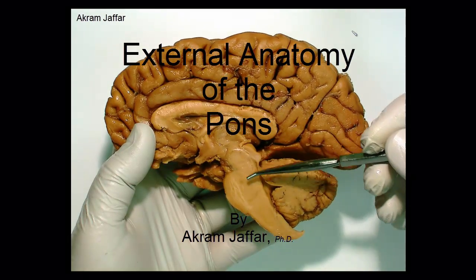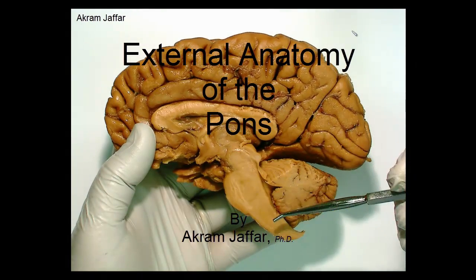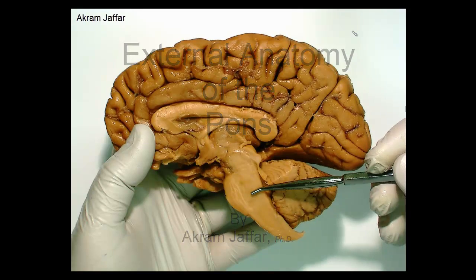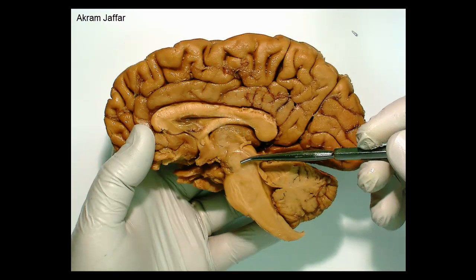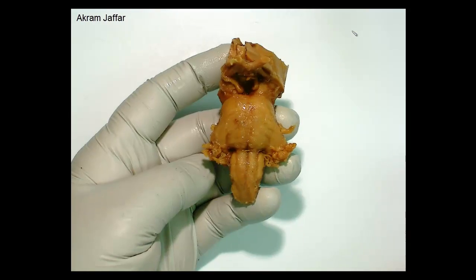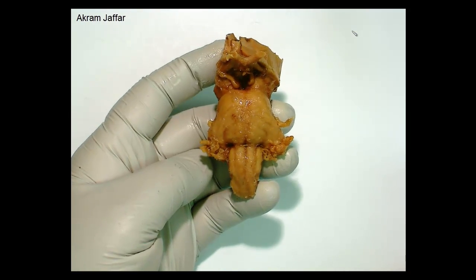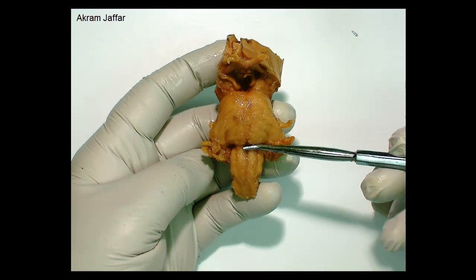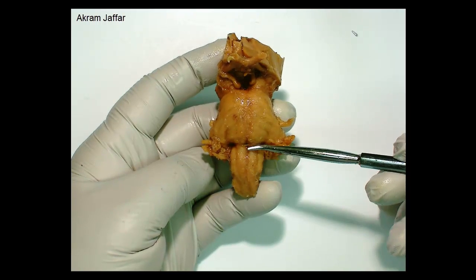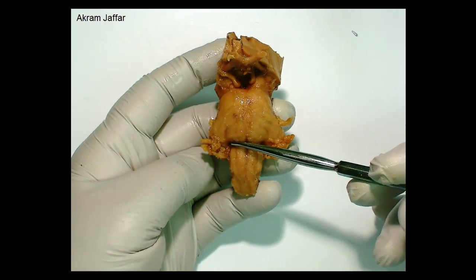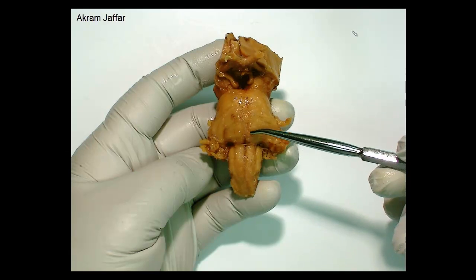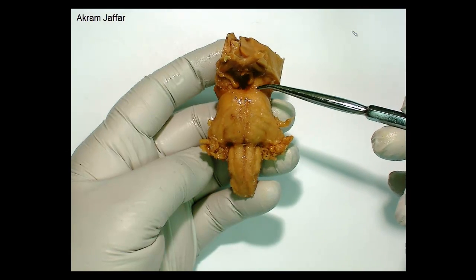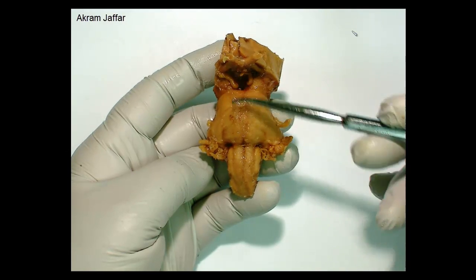The brainstem consists of the medulla oblongata, the pons, and the midbrain. This is a ventral, anterior view of the brainstem showing the medulla oblongata. Upwards, there is a clear sulcus separating it from the pons. Here is the pons, and then the midbrain.